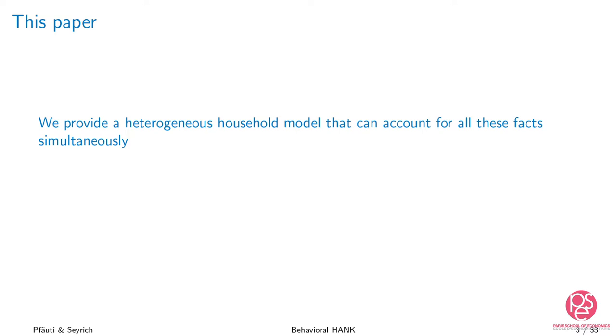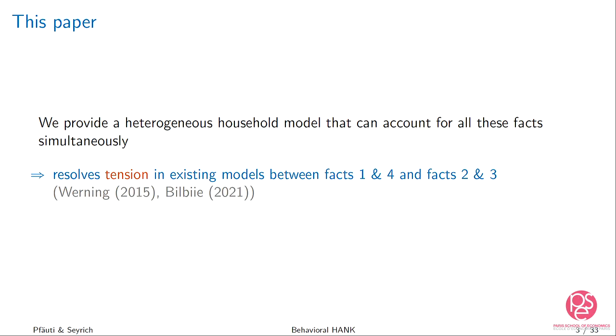What we do in this paper is provide a model with household heterogeneity that can account for all four facts simultaneously. We resolve a tension highlighted in the literature: existing HANK models, when they account for facts one and four — the micro-facts — have a really hard time matching facts two and three. And if they resolve facts two and three, they have a hard time getting facts one and four. This is the tension we want to resolve.